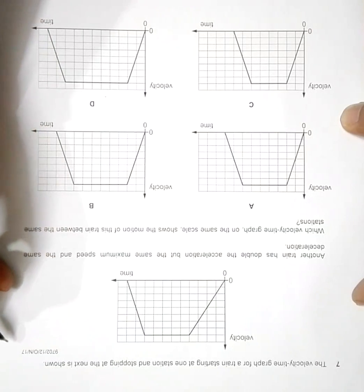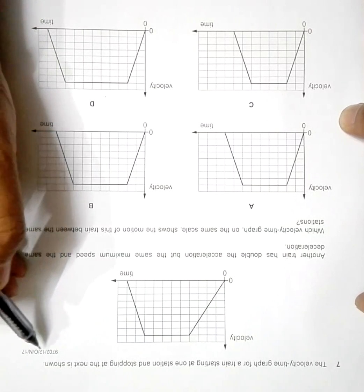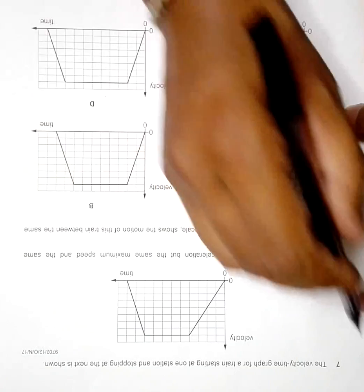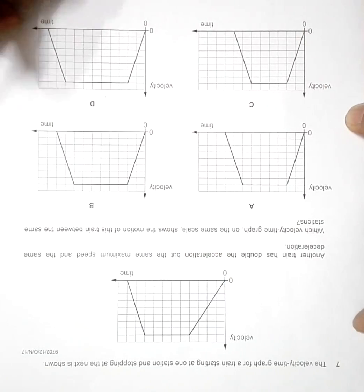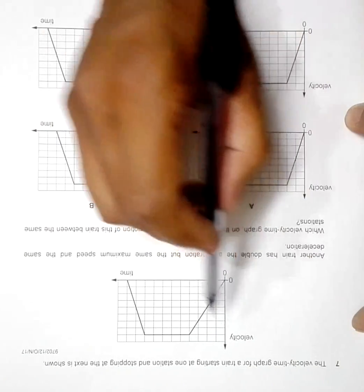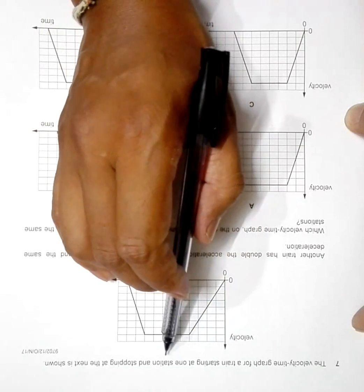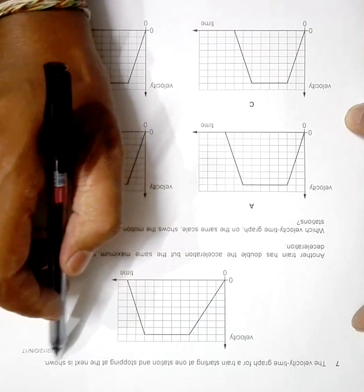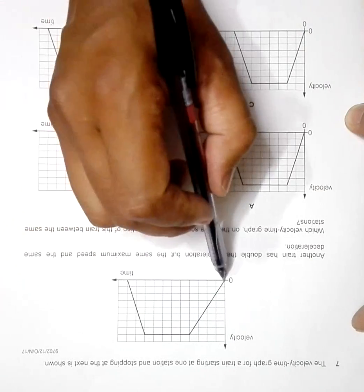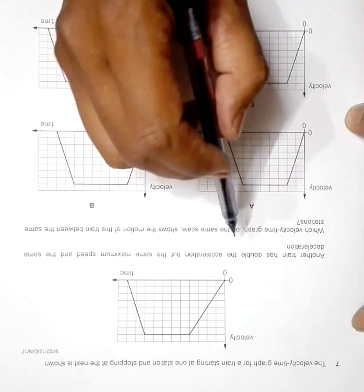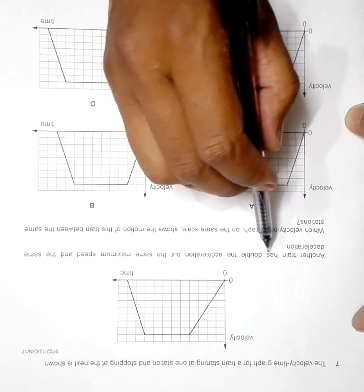This is question 7 from the 2017 October-November paper 1-2, and it's a bit tougher. The velocity-time graph for a train starting at one station and stopping at the next is shown. This is the graph, so this is time and this is velocity.